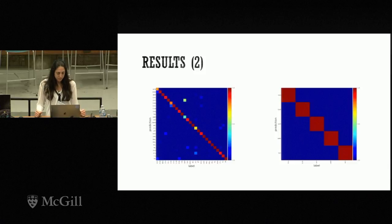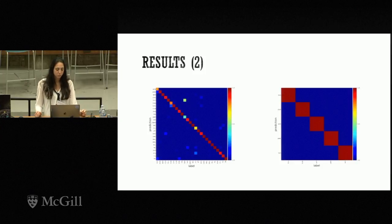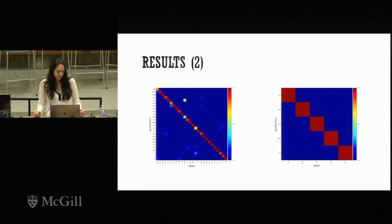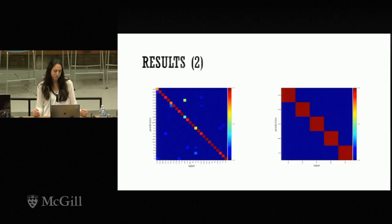We computed confusion matrices over the 26 populations and over the five larger geographical regions, for a network trained to classify all 26 populations but given no information on the larger geographical areas. The model still finds some confusion between populations belonging to the same larger geographical area or sharing some ancestry. When evaluated on the five larger geographical regions, it does a much better job.